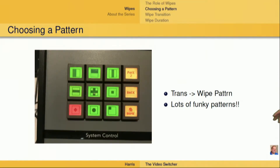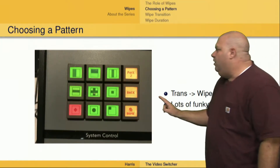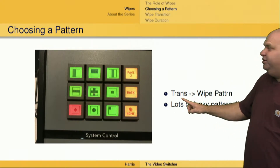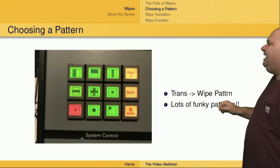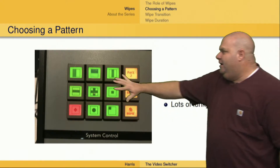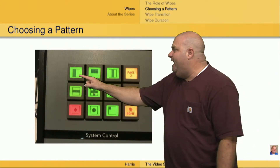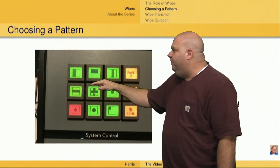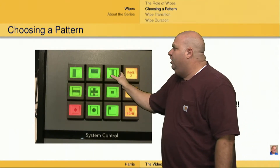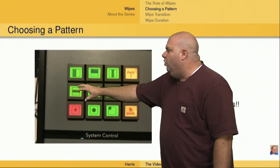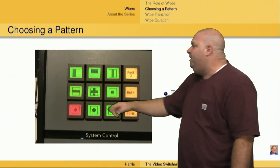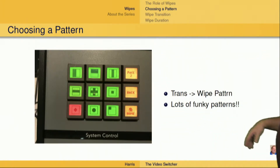The first thing we'll need to do is go to the Trans menu — meaning transition — and then select Wipe Pattern. That's going to give us the choice of many different types of patterns, whether it be just a horizontal or vertical bar, curtains, a T-shape, or a circle wipe. There's even heart wipes. There's all kinds of different patterns — lots of funky patterns if you want to look at it that way.